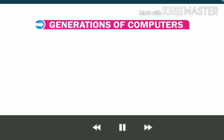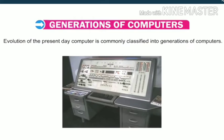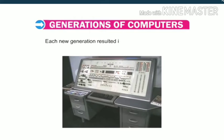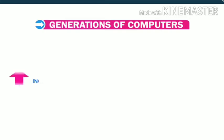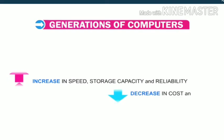Let us now learn about the generations of computers. The evolution of the present day computer is commonly classified into generations. Each new generation resulted in increases in speed, storage capacity and reliability, along with decreases in cost and size.